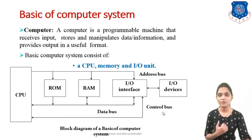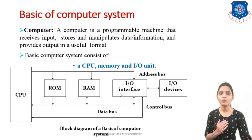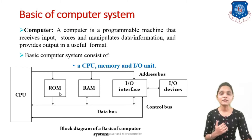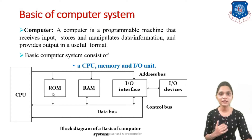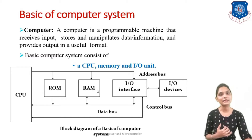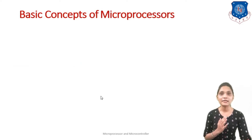This is the basic block diagram where the central processing unit (CPU) is connected with memory units like RAM and ROM, and some I/O devices via I/O interfaces. RAM means Random Access Memory and ROM means Read Only Memory — in ROM you can only read the data, whereas in RAM you can both read and write data. This is how your basic computer system works.